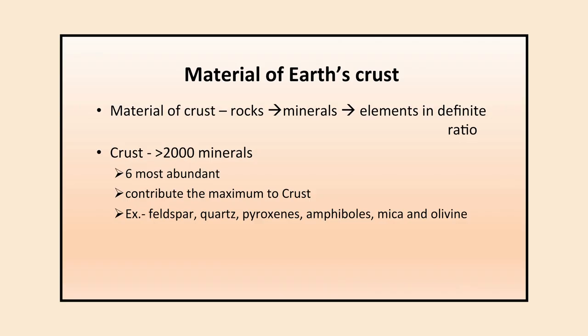The material of the Earth's crust is made up of rocks, and rocks are made up of minerals, and minerals are made up of elements in a definite ratio. So elements make minerals, minerals make rocks, and rocks make the uppermost crust. The crust has more than 2,000 minerals, of which six are most abundant: feldspar, quartz, pyroxenes, amphiboles, mica, and olivine.